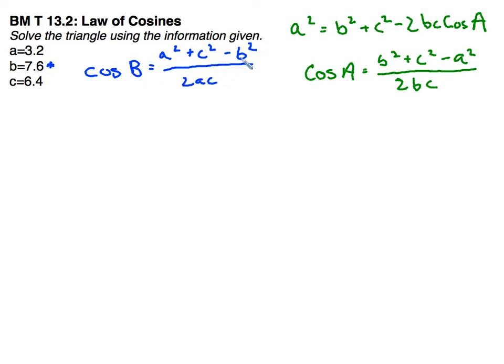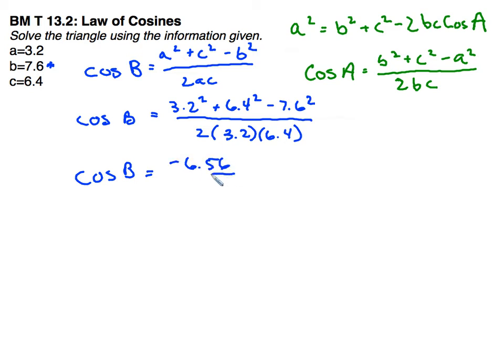And this is sort of that angle minus the side opposite. So we have cosine of b equals 3.2 squared plus 6.4 squared minus 7.6 squared all over 2 times 3.2 times 6.4. When I work that out in the calculator, on the top I get negative 6.56 and on the bottom 40.96.